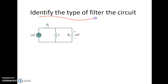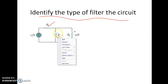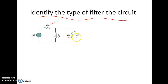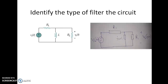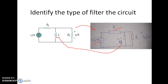The question is: identify the type of the filter for the given circuit. Here R1 resistance is present, an inductor is connected with R2 resistance, and we are taking the output across R2 while the input voltage is applied at the input. We will follow the general procedure — first of all, we have to convert the circuit into the frequency domain.